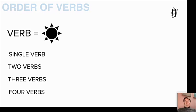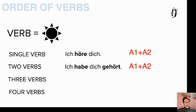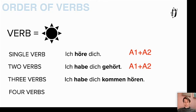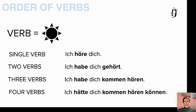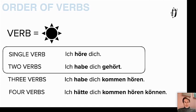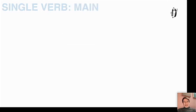We have four — actually there's also five, if not six, thinkable possibilities. You can have a single verb in a sentence, two, three, or four. Here's an example: 'Ich höre dich' — I hear you. In the past tense you have two verbs: 'Ich habe dich gehört.' Three verbs: 'Ich habe dich kommen hören' — I have heard you coming. And four verbs: 'Ich hätte dich kommen hören können' — I could have heard you coming. The good news is we will focus on single and two verbs, and for entertainment purposes I will show you three verbs. Single and two verbs cover 80, if not 90% of your needs.